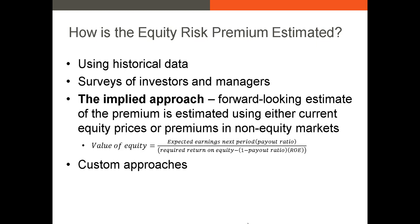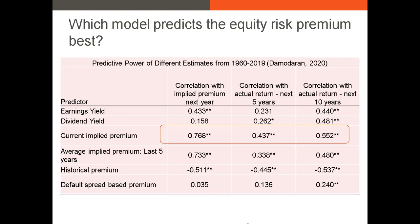If you're wondering which model works best, Professor Damodaran has a recent paper examining each method using data from 1960 to 2019. He calculates the risk premium using several well-respected models and compares them to future returns and future risk premia. The findings indicate that the model that best predicts future returns and future premia is the current implied premium from the model on the previous slide.